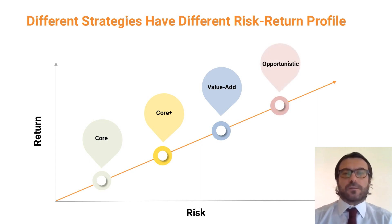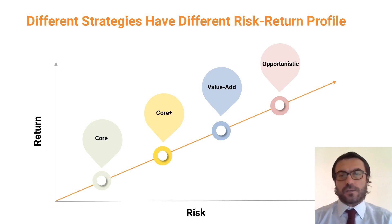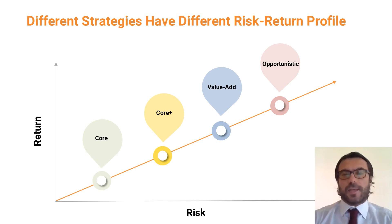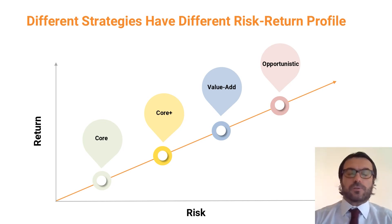Finally, the riskier strategy is what is called opportunistic, or it could be pure speculative development. There are different degrees of risk. One could be just buying the land, applying for permission to build, and then building the property. This obviously has the highest form of returns, but at the same time it is also the highest risk.